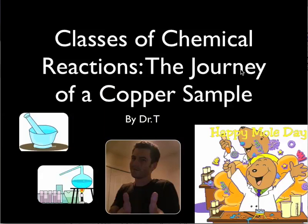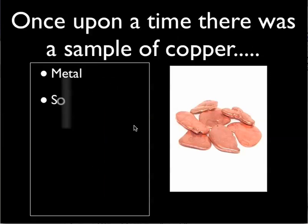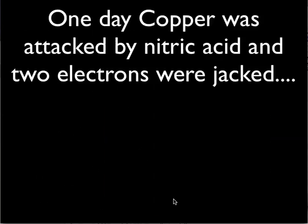We're looking at the journey of a copper sample through a series of reactions that we will then classify. Copper is a metal — it's a solid and it's shiny. In its elemental state, copper is neutral. We represent copper with its symbol Cu, and we write a subscript of zero to indicate it is not charged, meaning we have a total balance of electrons and protons.